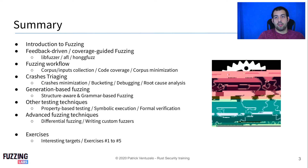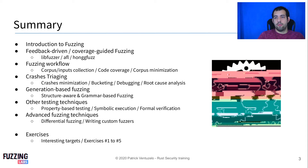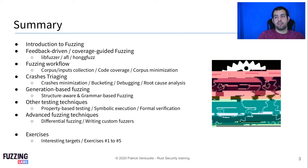Then I'm going to discuss about some other testing techniques like formal verification and symbolic execution — just a quick overview to give you some basis. And finally the last fuzzing technique we're going to discuss will be differential fuzzing, which is really useful to find logic bugs, and how to write custom fuzzing on Rust.